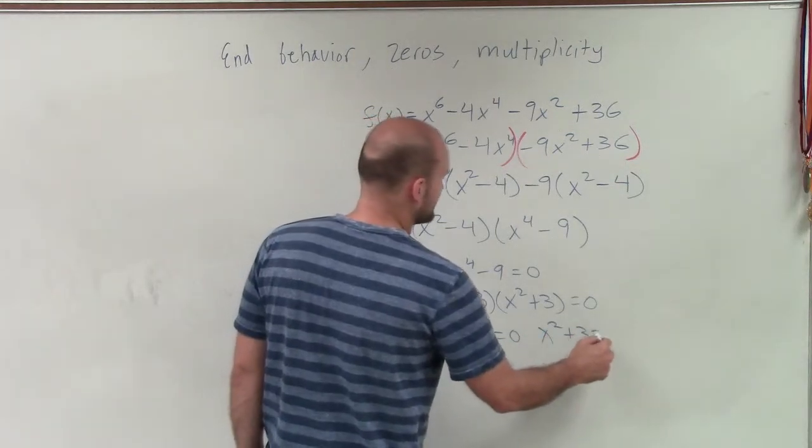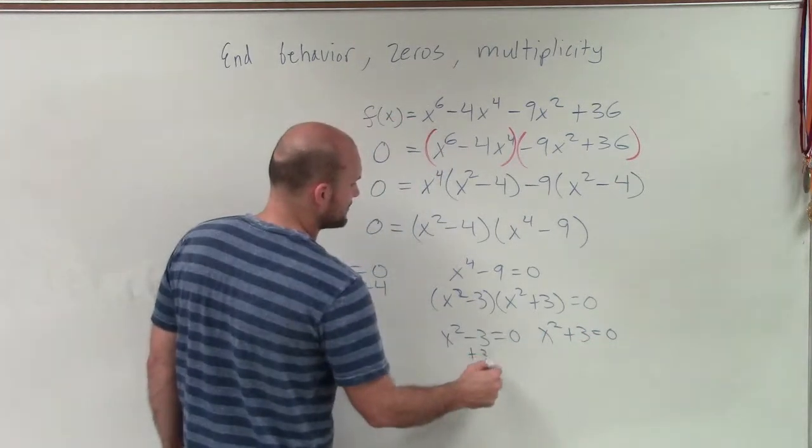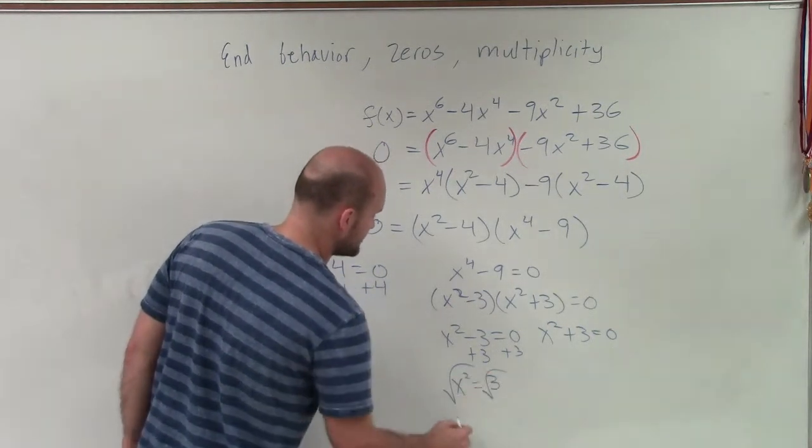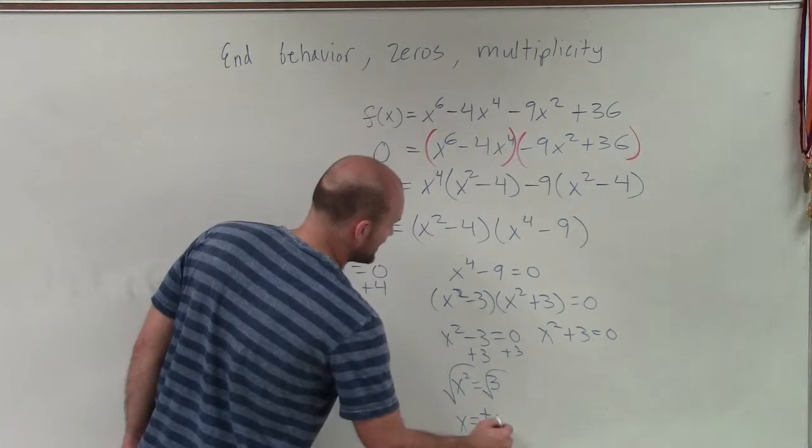By solving for my x, I get x² = 3. Take the root. x = ±√3.